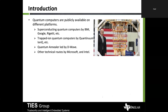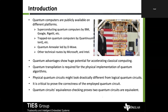What are the challenges of quantum computing? Quantum computers are publicly available on different platforms — superconducting quantum computers like IBM, Google, and Rigetti; trapped-ion quantum computers by IonQ; quantum annealers like D-Wave machines; and other technology routes for Microsoft and Intel. Quantum transpilation is required for physical implementation of quantum algorithms. Physical quantum circuits might look drastically different from logical quantum circuits, so it's critical to prove the correctness of the implemented quantum circuit.